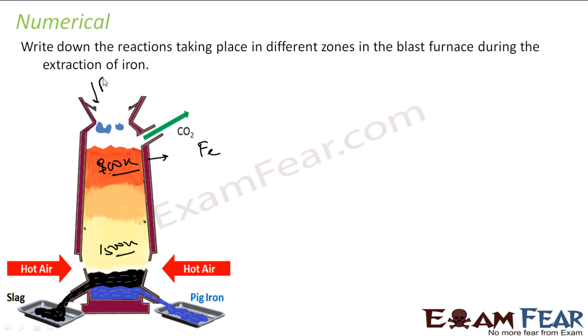At this low temperature range, at the higher part, we put iron oxides, calcium carbonate and coke - a mixture of these three. So at this point the reaction that happens is Fe2O3 reacts with carbon monoxide to give Fe3O4 plus carbon dioxide.